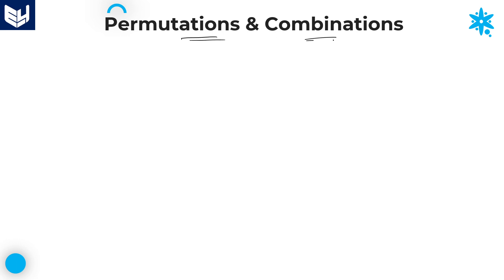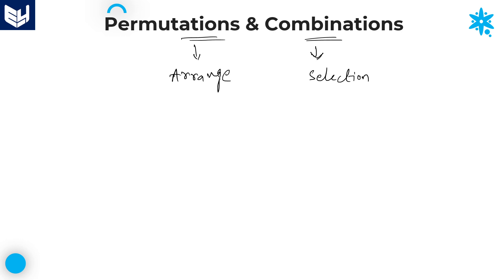Hi everyone, welcome to the session. In this session I am continuing the introduction part of permutations and combinations. In the last session I explained what is permutation and what is combination. In permutation, order is very important. Combination means it is a selection — whenever you want to select something, use combination; if you want to arrange something, use permutation.